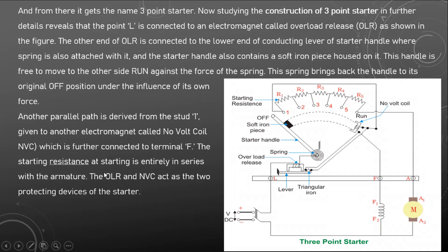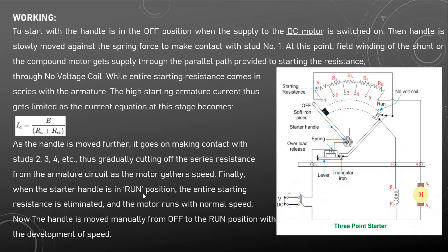The other end of the starting resistance is connected to the no voltage release and is further connected to field terminal F. The overload release (OLR) and the no voltage coil (NVC) act as the two protecting devices of the starter. This completes the construction of the three-point starter.